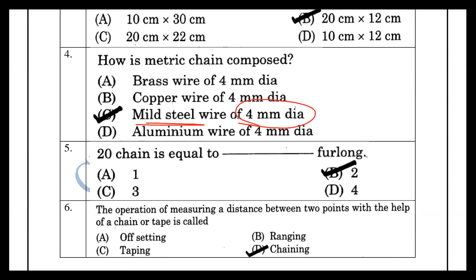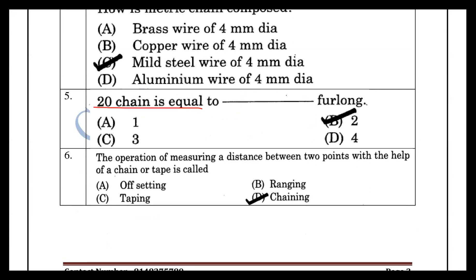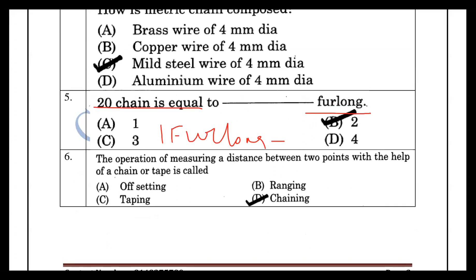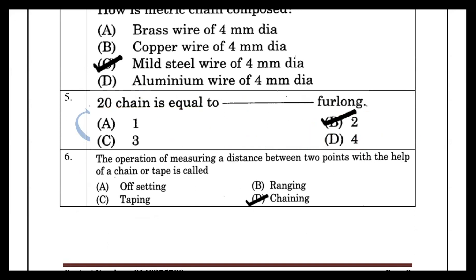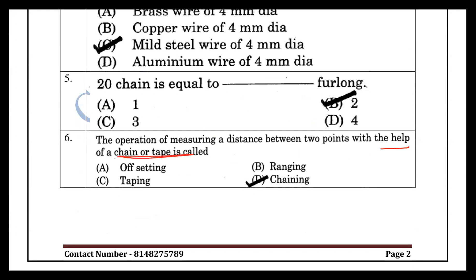Next, unit conversion. The operation of measuring the distance between two points with the help of a chain or tape is called chaining.